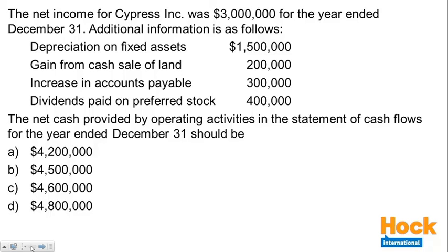The net income for Cypress Inc. was $3 million for the year ended December 31. Additional information is as follows: depreciation on fixed assets $1.5 million, gain from cash sale of land $200,000, the increase in accounts payable $300,000, and dividends paid on preferred stock $400,000.